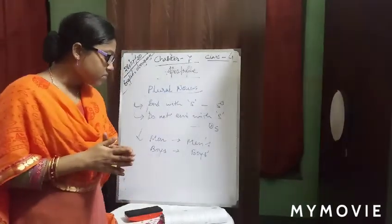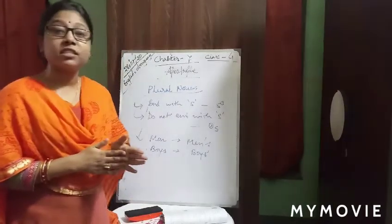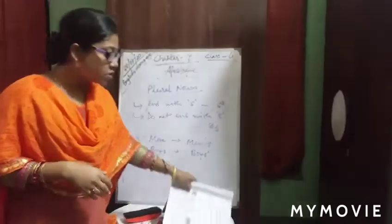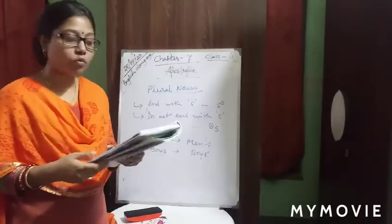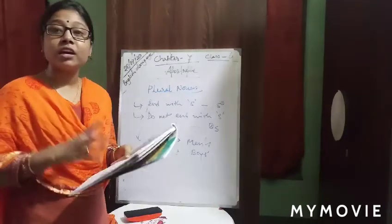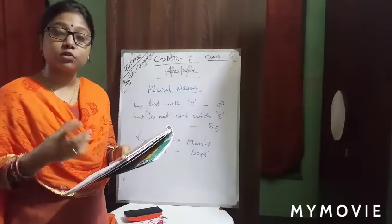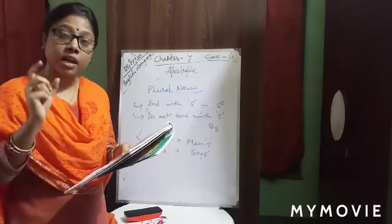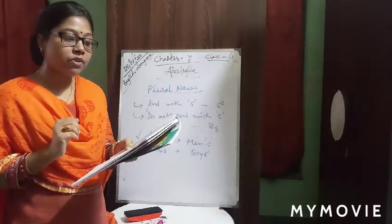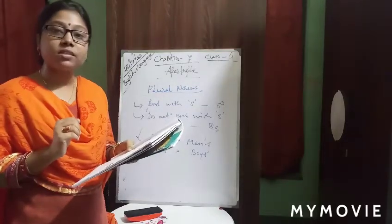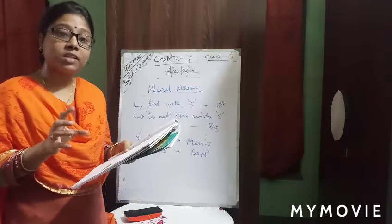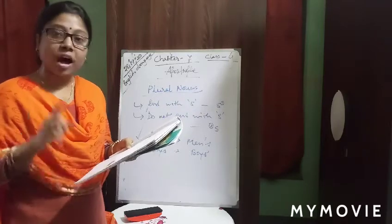Now let's do the exercises. We have to rewrite the sentences where an apostrophe is needed. The first one: 'We traveled in the boys' car.' Boys represents plural and ends with s, so the apostrophe is placed after the s.